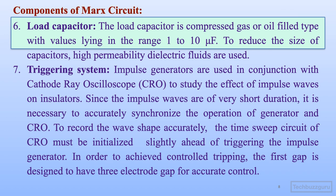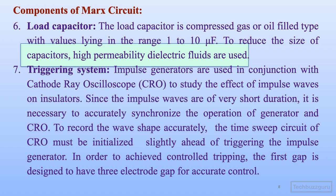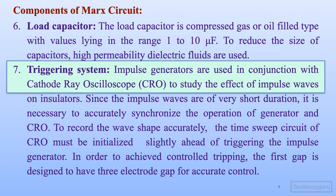The sixth element is the load capacitor or the test object. The load capacitor can be a compressed gas or oil field type with values lying in the range of 1 to 10 microfarads. The size of these load capacitors can be reduced by using high permeability dielectric fluids. Lastly, the triggering system is used for synchronizing the operation of the impulse generator with the cathode ray oscilloscope. Generally all impulse testing is done and observed with the help of a CRO for accuracy.